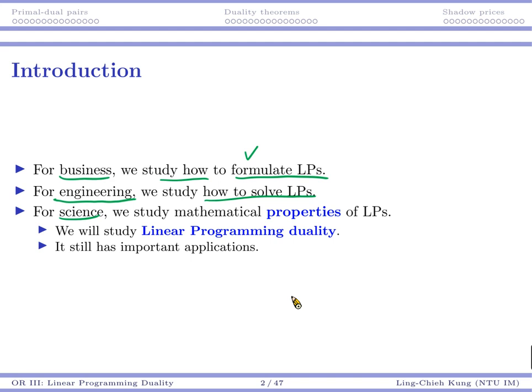And now, that's the starting of our third part. We want to do things from the science perspective. We want to talk about the theories, the mathematical properties of linear programs, nonlinear programs, integer programs.